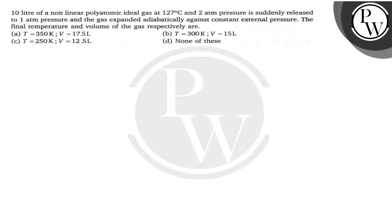Hello guys. 10 liters of a non-linear polyatomic ideal gas at 127 degree Celsius and 2 atmosphere pressure is suddenly released to 1 atmosphere pressure and the gas expanded adiabatically against constant external pressure. Find the final temperature and volume of the gas.